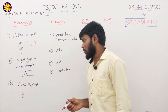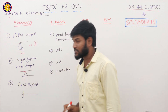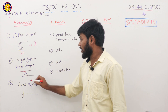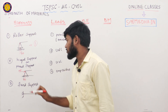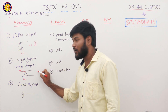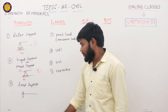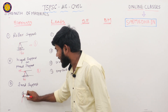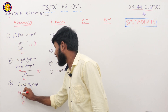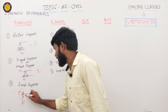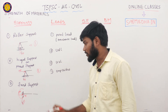Coming to the hinged support, two types of reactions are possible: one vertical reaction RA and one horizontal reaction HA. So the number of reactions at hinged support is two. Coming to the fixed support, a fixed support has three reactions: RA, HA, and a moment at A.